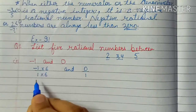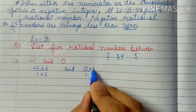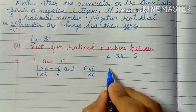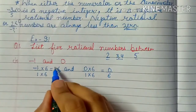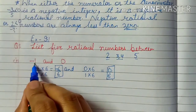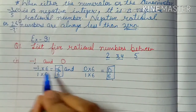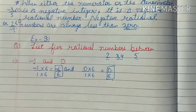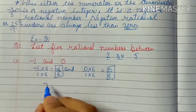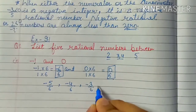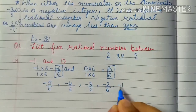We multiply both numerator and denominator by 6 for each number. So minus 1 upon 1 becomes minus 6 upon 6, and 0 upon 1 becomes 0 upon 6. Now we have minus 6 upon 6 and 0 upon 6, which are equivalent to minus 1 and 0 respectively. We can now easily write 5 numbers between them: minus 5 upon 6, minus 4 upon 6, minus 3 upon 6, minus 2 upon 6, and minus 1 upon 6.